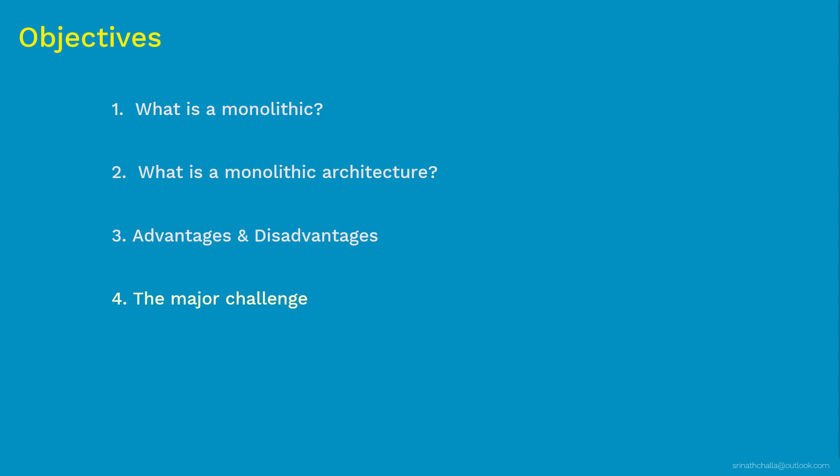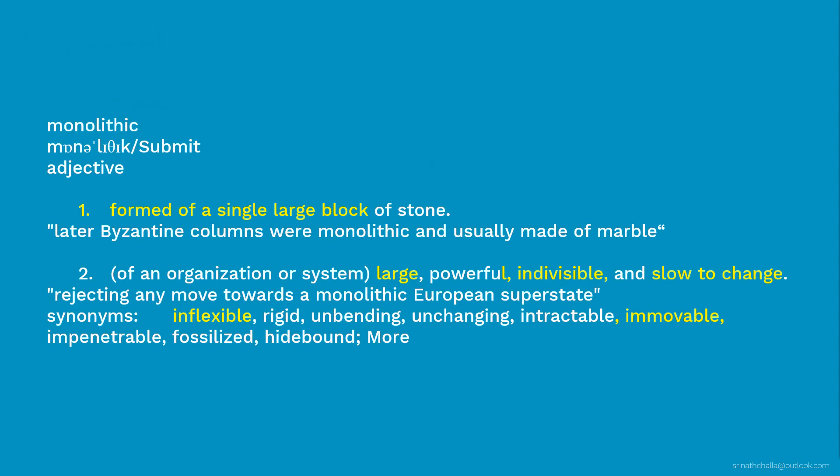Let's get started with our first topic: what is monolithic in general. If you just Google it, here is a definition you will get. To make it easy I have highlighted the text you might want to focus on. So monolithic in general is something which is a single large block, indivisible, hard to change, inflexible and immovable. That briefly explains at a high level about monolithic architecture in IT and its characteristics.